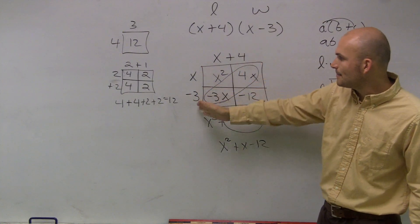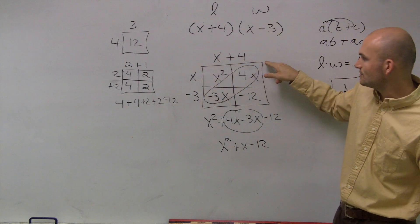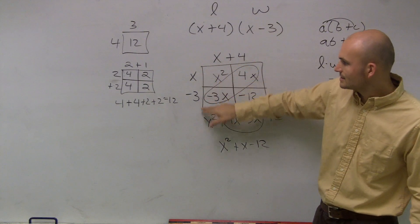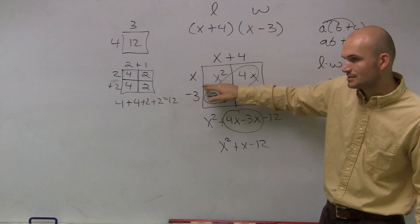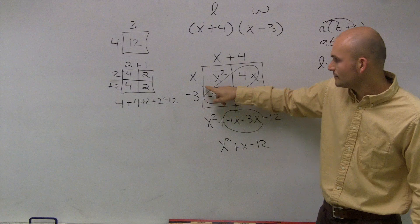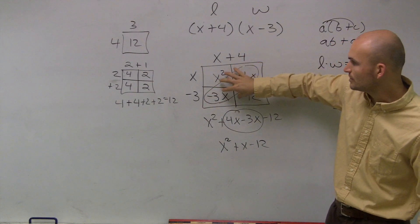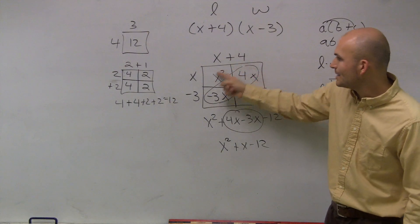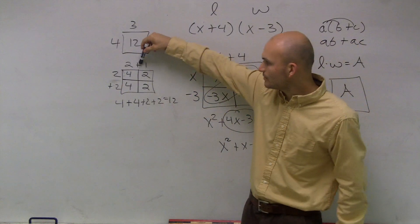Well, the way that we can do that is separate them. So we can say this length right here is x. This length is 4. This length is x. This length is negative 3. So to find this area is just x times x. This area is negative 3 times x. So what you did is we get all the separate areas of each one of these four boxes. Well, when we add up the areas of all these four boxes, it gives us the total area.